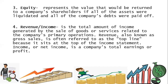Fourth, revenue or income. Revenue is the total amount of income generated by the sale of goods or services related to the company's primary operations. Revenue, also known as gross sales, is often referred to as the top line because it sits at the top of the income statement. Net income is a company's total earnings or profit.